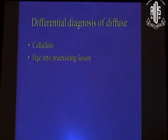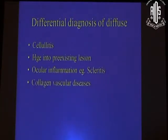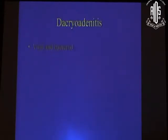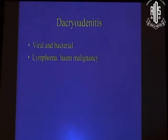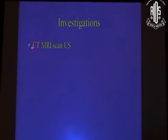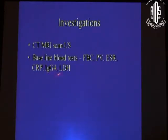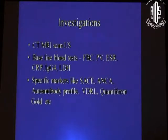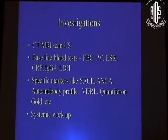Differential diagnosis of diffuse orbital inflammation: it could be cellulitis, hemorrhage, scleritis, or collagen vascular disease. Dacryoadenitis could be due to viral or bacterial causes, but remember any malignancy can present as dacryoadenitis. Investigations: normally we do a CT scan as the first port of call; MRI if necessary. We rarely do ultrasound for orbital diagnosis. Baseline blood tests are done. IgG4, which has come up within the last three or four years, causes a more sclerosing type of orbital inflammation. You should look for specific markers — quantiferon gold for tuberculosis in specific situations, VDRL — and as I said, systemic workup is indicated in all patients diagnosed with orbital inflammation.